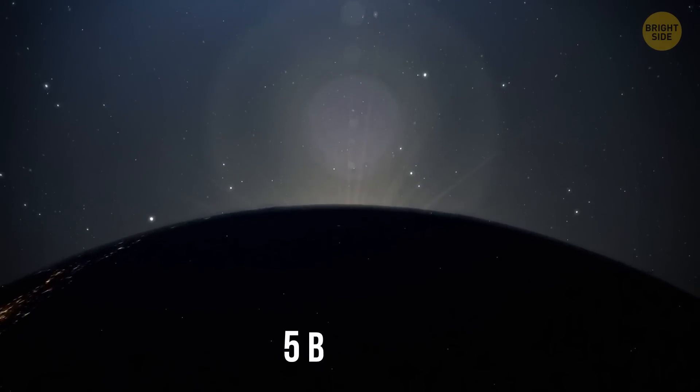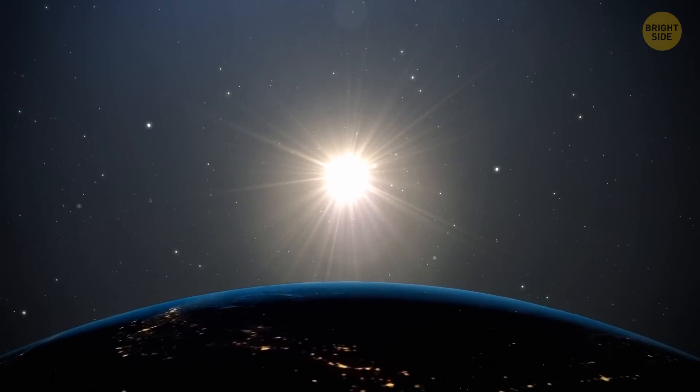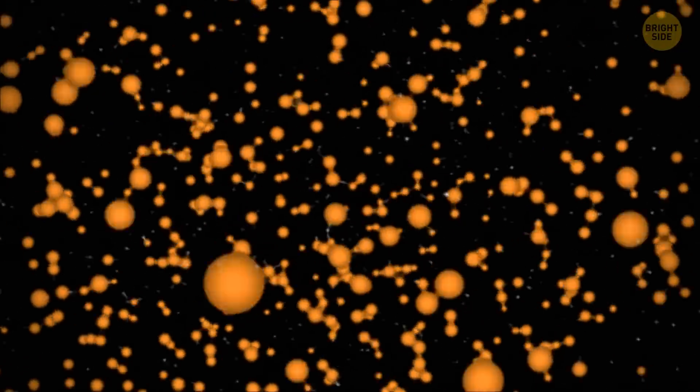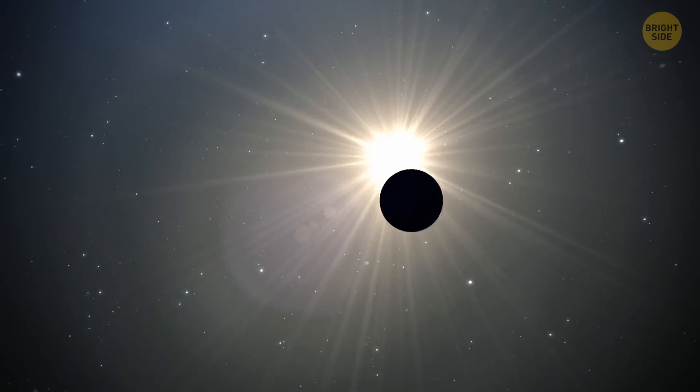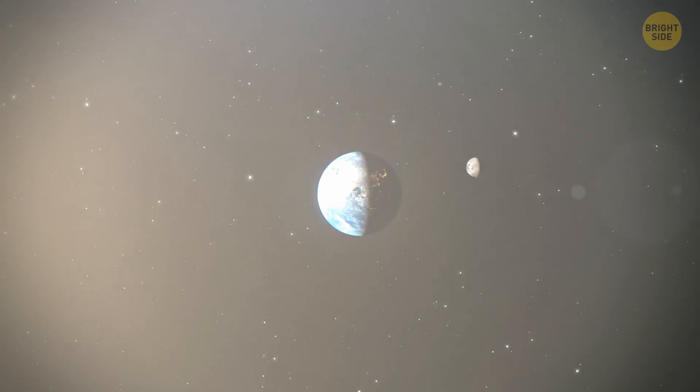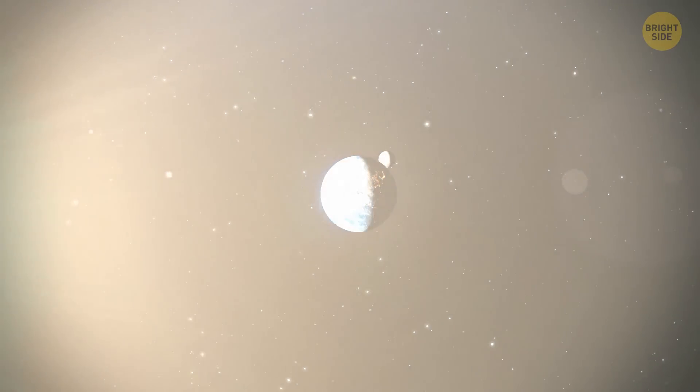But in around 5 billion years, the life cycle of the Sun will come to an end. The hydrogen inside it will run out. Our star will begin to grow gradually, and you can't even imagine just how big it will become. And then, it will start eating all the nearby planets. That's when we'll regret being so close to it.